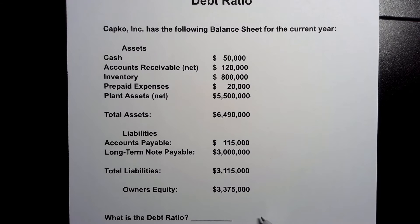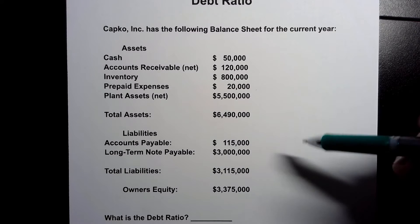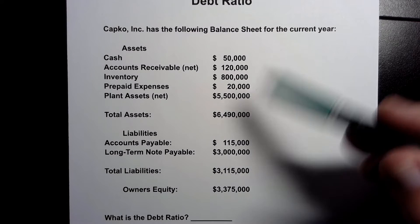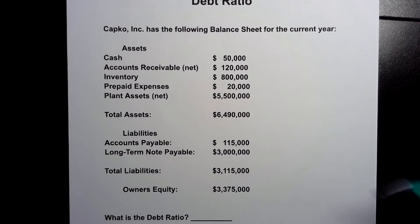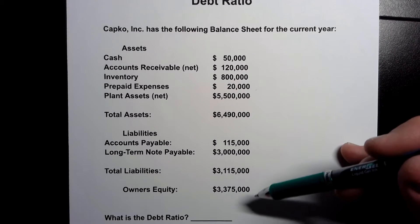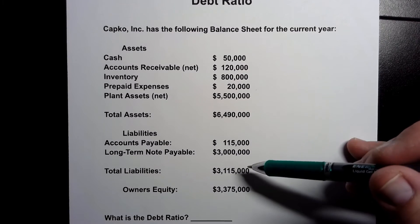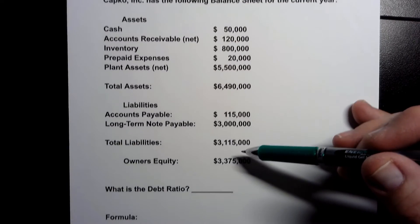And we then have owner's equity of three million three hundred and seventy-five thousand dollars. So this is a simplified balance sheet — you might have one that's more detailed or less detailed, but the calculation will be the same.